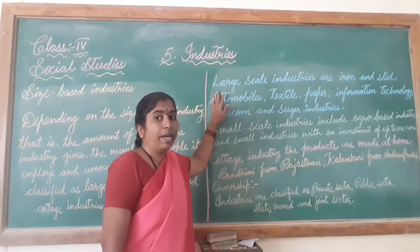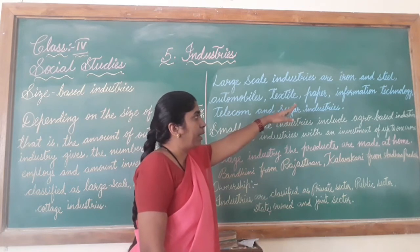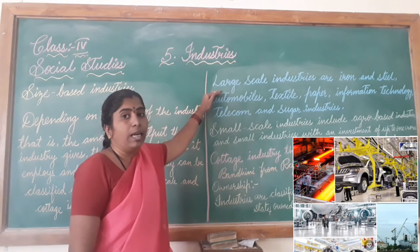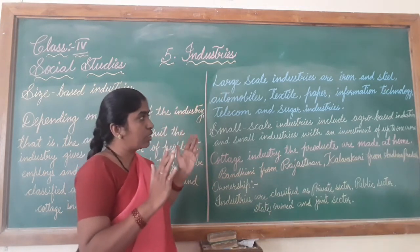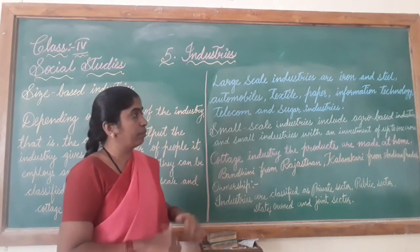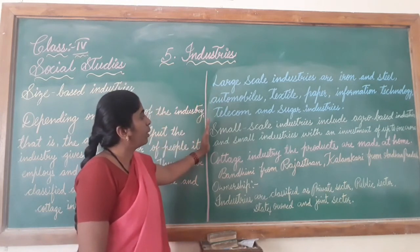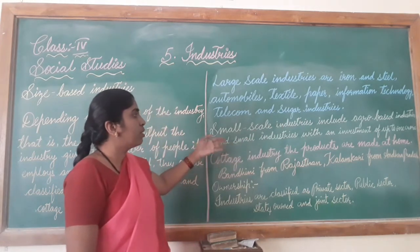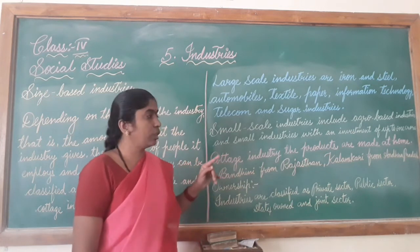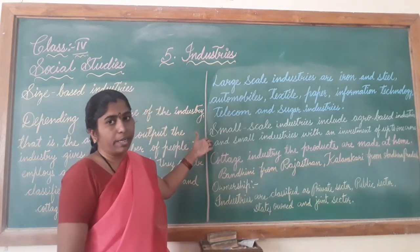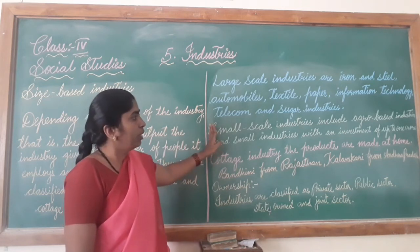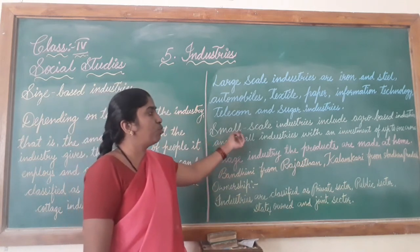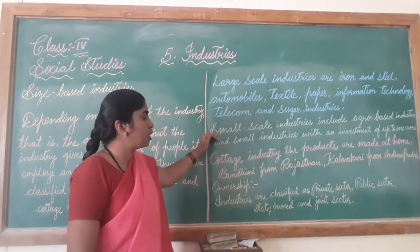Small-scale industries include agro-based industries and small industries with an investment of up to 1 crore. Cottage industries are those where products are made at home. People from one family work in cottage industries, sometimes employing another 2-3 people. They make goods even in a single room without high-technology machines.